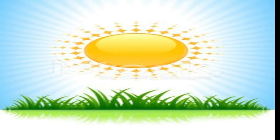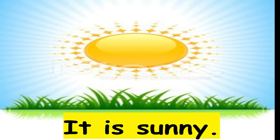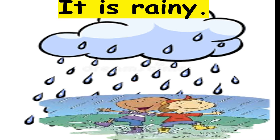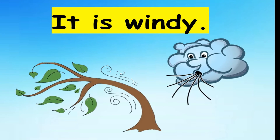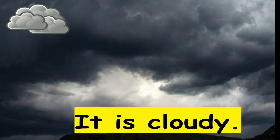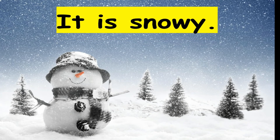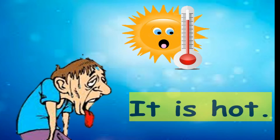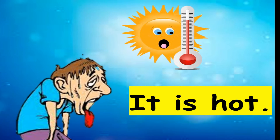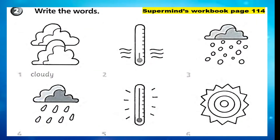Now we will learn some sentence structures about the weather. It is sunny. It is rainy. It is windy. It is cloudy. It is stormy. It is snowy. It is hot. It is cold.